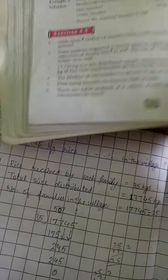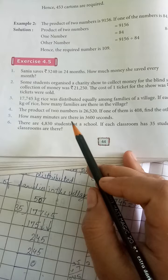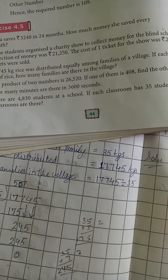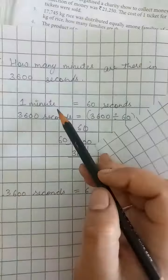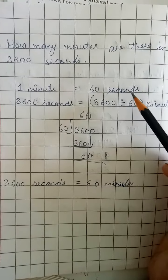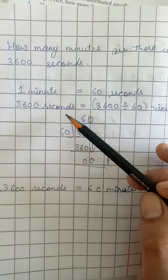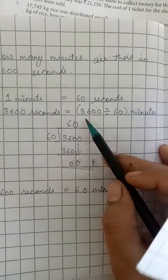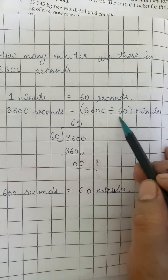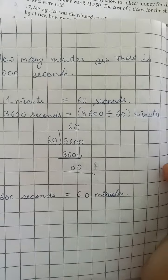Now let's discuss question number 5. How many minutes are there in 3,600 seconds? We know 1 minute is equal to 60 seconds. So how many minutes are there in 3,600 seconds? We divide by 60 to get the number of minutes.